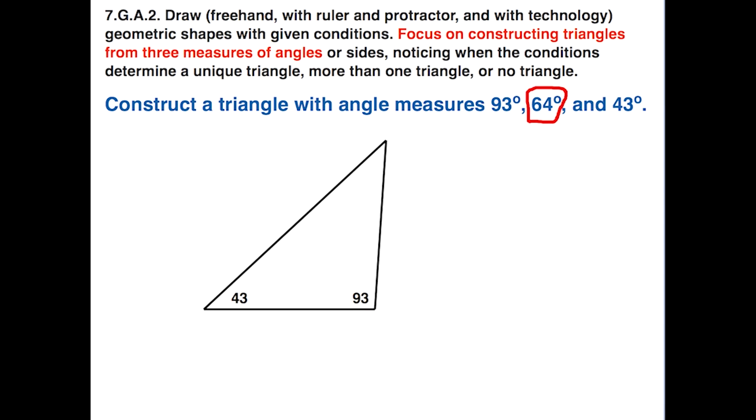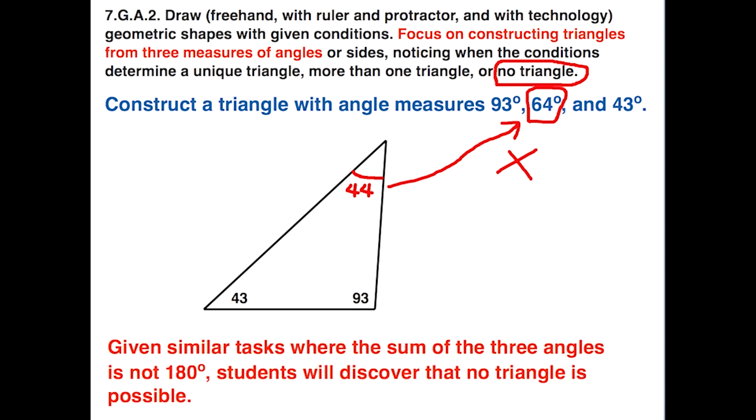So now the question is, the 64 degrees, is that going to be that top angle? Well, let's measure it. Okay, wait a minute. We've got a problem. That's not 64 degrees. The protractor is saying 44 degrees. Well, it turns out this isn't possible. There's no way that we can do this. There's no triangle that can be formed with these three angles. And of course, what students can do is verify whether or not those three angles that were given add up to be 180 degrees. And of course, they'll find out no.